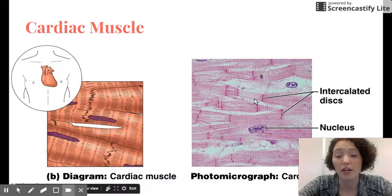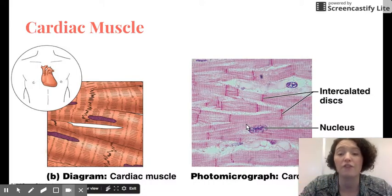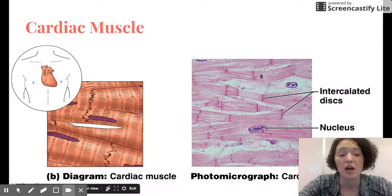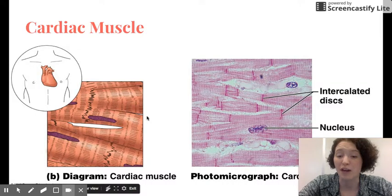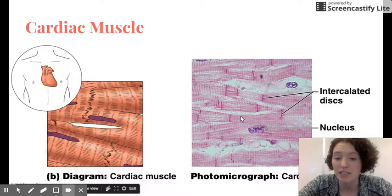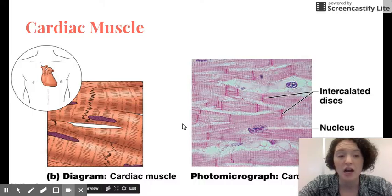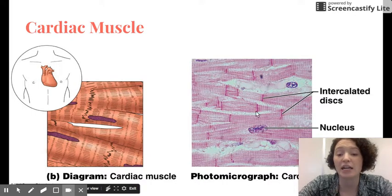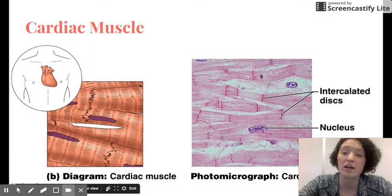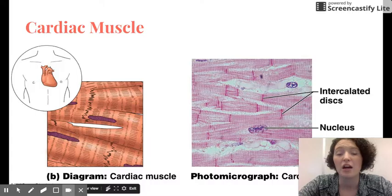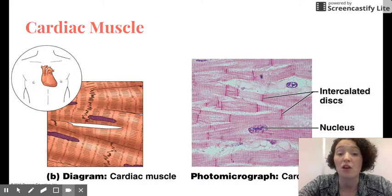They're relatively short, like this is a single cell here, in comparison to the long fibers of skeletal muscle. And they have branches, so you can see that in some cases they branch here. They connect really tightly to each other at these connections called intercalated discs. We'll talk a little bit more about that when we get to our unit on the heart.